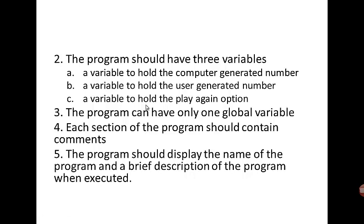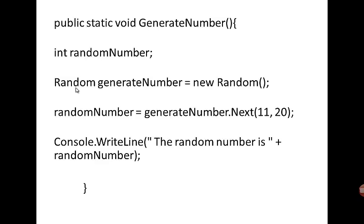The program should display the name of the game and a brief description when the program is run. Now I'm going to help you with the random function. This would be the actual method you would use to generate the random number — I'm going to give that to you. You're going to have a variable to hold the random number that the computer generates. Here we're going to declare an object of class Random.